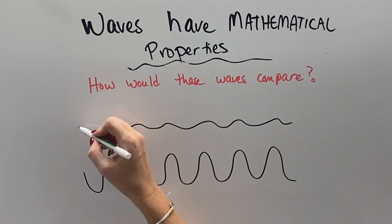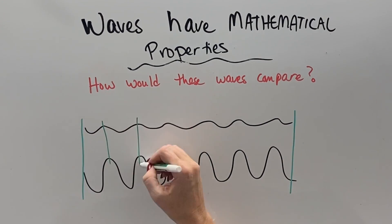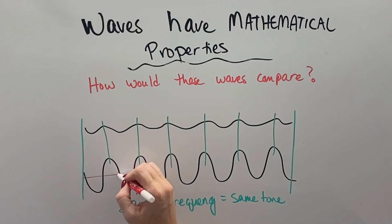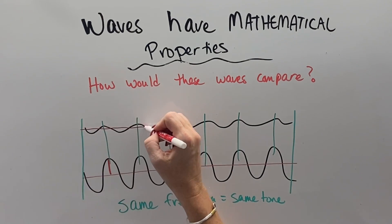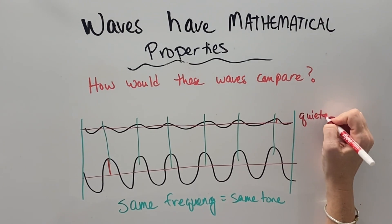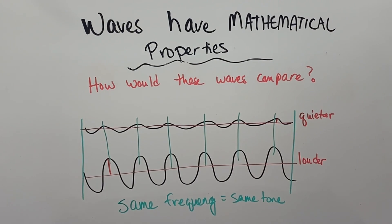Quiz time! How would these two waves compare if we were to look at them? Well, they have the same frequency. So they're going to have the same tone or the same sound. But what's the difference going to be? Well, the difference is the amplitude, right? And so that means that the top wave is going to be quieter and the bottom wave is going to be louder.